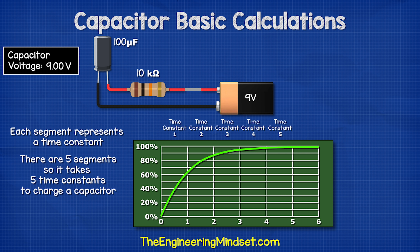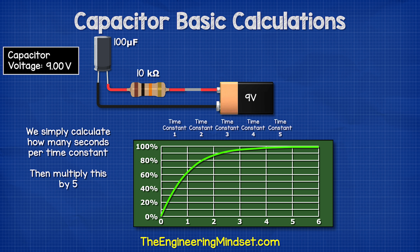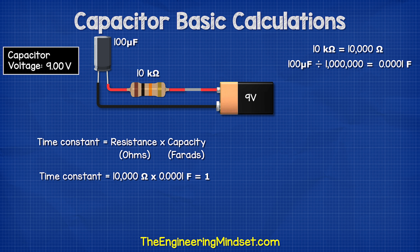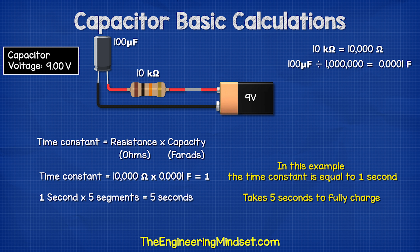Each segment represents something called a time constant. As we have five segments, we have five time constants, so it will take five time constants to charge the capacitor from zero to just under 100%. All we need to do is calculate how long one time constant is and then multiply by five. The time constant in seconds equals the resistance in ohms multiplied by the capacitance in farads. So we convert to ohms and farads: 10,000 ohms multiplied by 0.0001 farads equals 1 second. Therefore five time constants equals five seconds, meaning it takes five seconds for the capacitor to fully charge to nine volts.